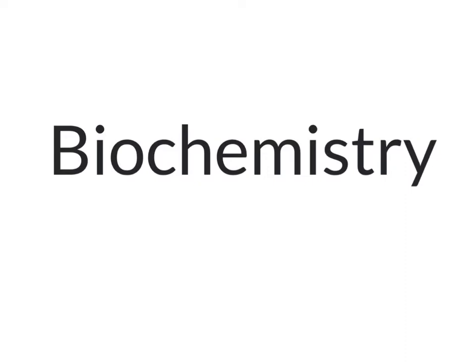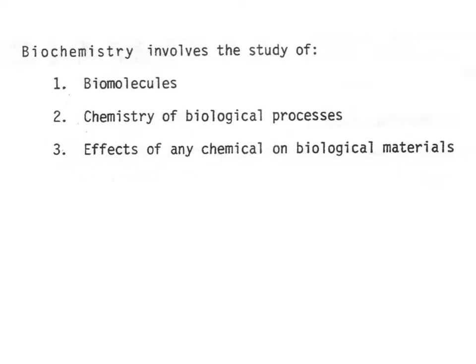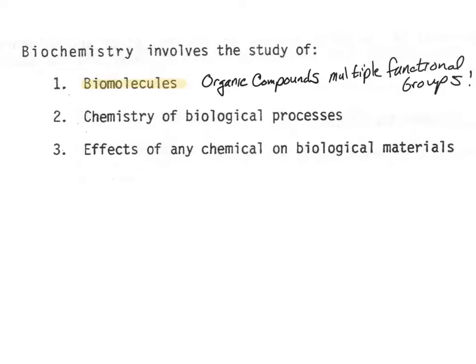First, we'll look at what biochemistry is, and then we'll look at the classes of biological compounds. Generally speaking, biochemistry involves the study of biomolecules, which are organic compounds, sometimes with multiple functional groups, and the chemistry of biological processes — organic reactions done in a biological setting. Finally, it covers the effects of various chemicals on biological materials. We're going to talk about some generalizations of the biomolecules, their processes, and the effects of various chemicals on those biomolecules.